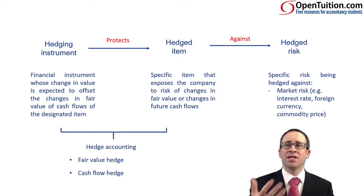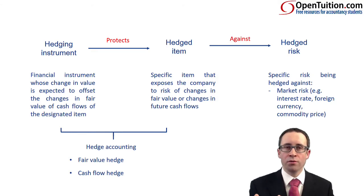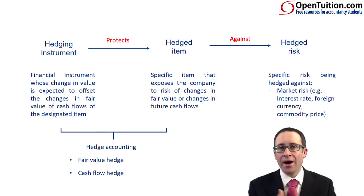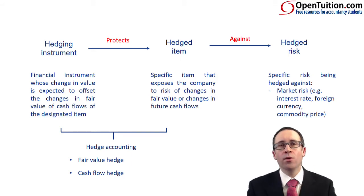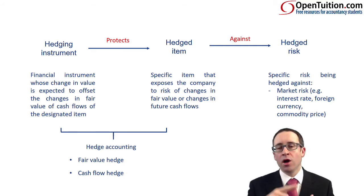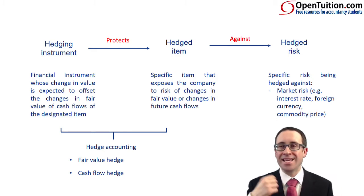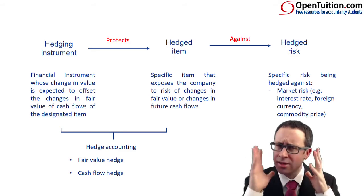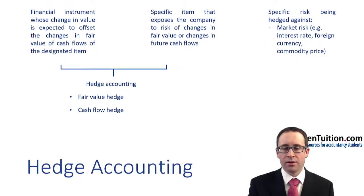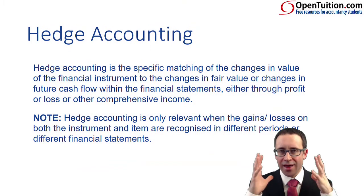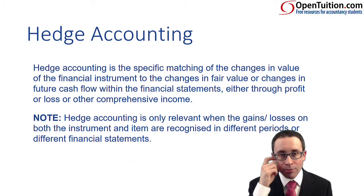A derivative is essentially a bet — a bet on how you think something will move: will it go up or down? Depending upon the outcome of your bet, you will either win or lose. If you win, you make a gain and that gain will offset a loss on the item. If you make a loss on the instrument, that will offset a gain on the item.